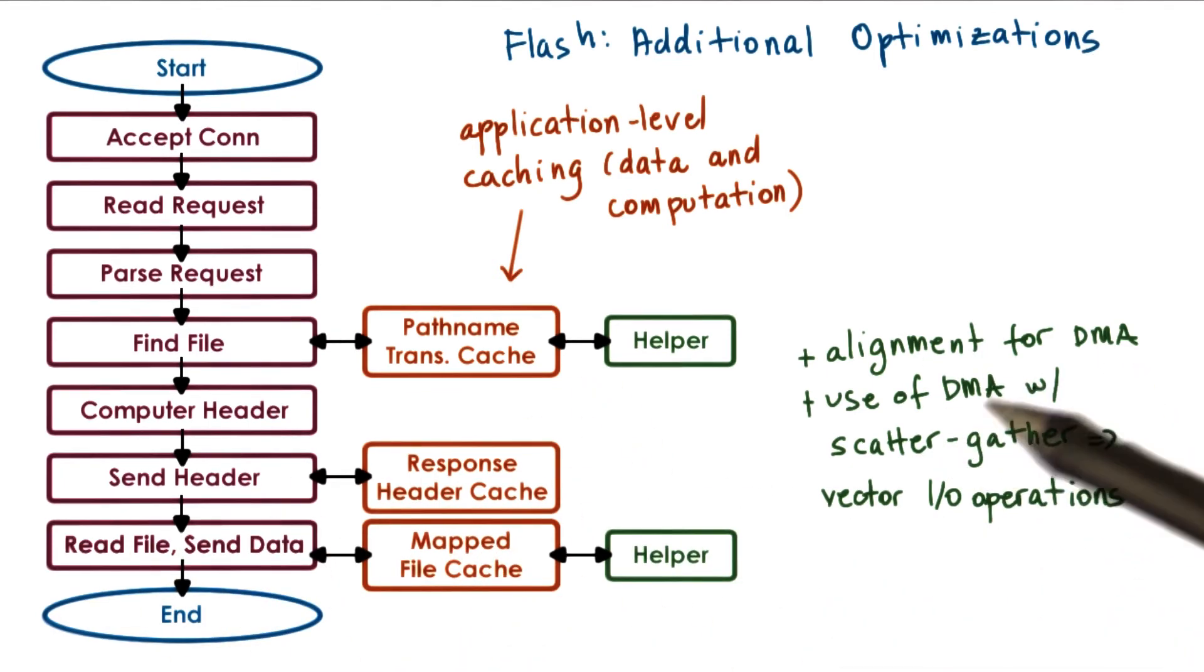Similarly, they use DMA operations with scatter-gather support, which means the header and actual data don't have to be aligned consecutively in memory. They can be sent from different memory locations, avoiding a copy.